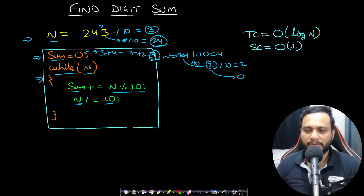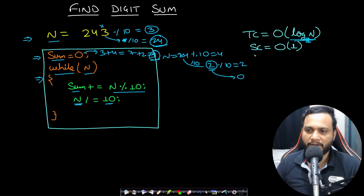This is the digit sum code we'll use. The time complexity is O(log n) — even though it might seem constant, it is precisely O(log₁₀ n), and since 10 is a constant we write it as O(log n). The space complexity is O(1).